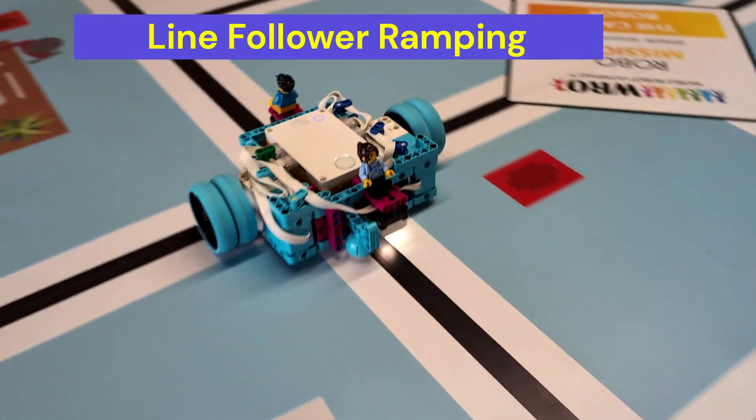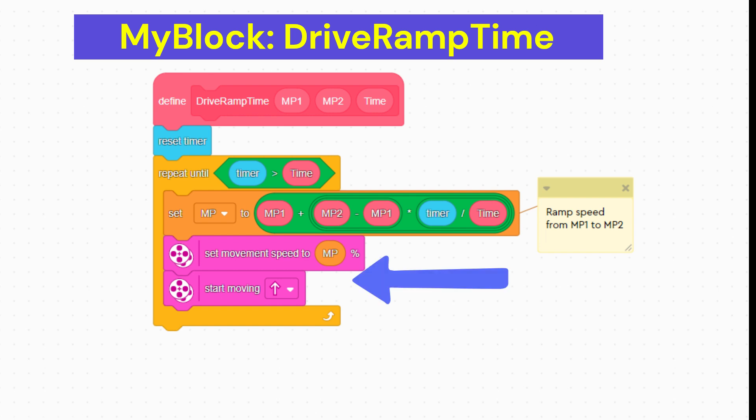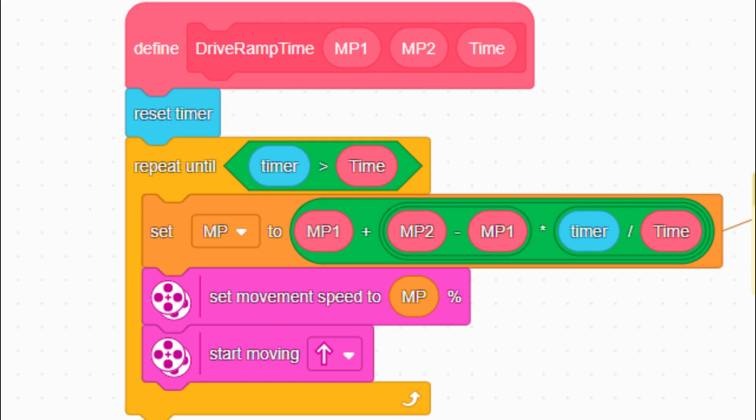Later we will look at ramping with a line follower or a gyro controlled robot. Here we use standard movement blocks, but calculate the speed with this mathematical equation. Now don't go to sleep, it's not that bad.